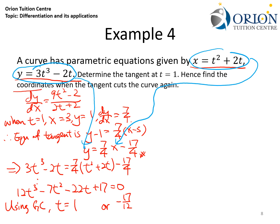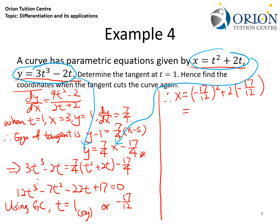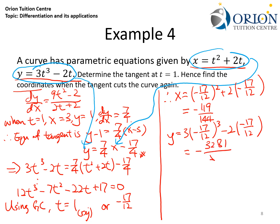Based on the second value t equals negative 17/12, I find the corresponding x and y values. x equals (negative 17/12)² plus 2 times (negative 17/12), which gives negative 119/144. And y equals 3 times (negative 17/12)³ minus 2 times (negative 17/12), which gives negative 3281/576. These are the coordinates of the second intersection point.